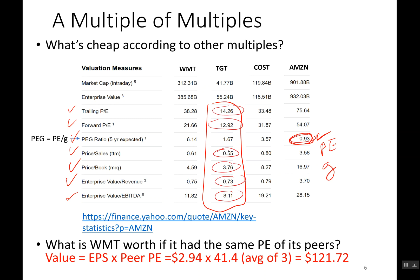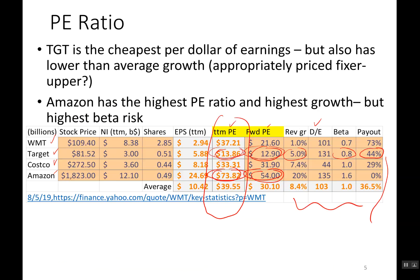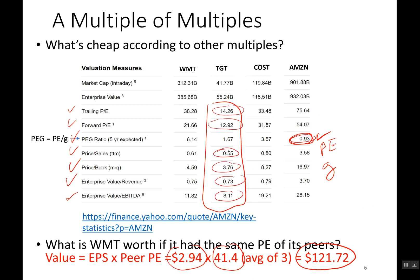Now let's think about how we can use this information to actually value a stock. What if Walmart had the same P/E ratio as its peers? If I take the average P/E ratio of the three comparable companies, it's 41. If I take Walmart's earnings per share of $2.94 and multiply by that P/E ratio of 41, that implies Walmart should have a stock price of $121. Walmart was trading at $109, so this tells me that if Walmart deserves the same P/E ratio as its peers, it would be selling at $121.